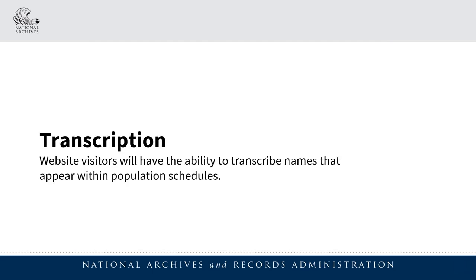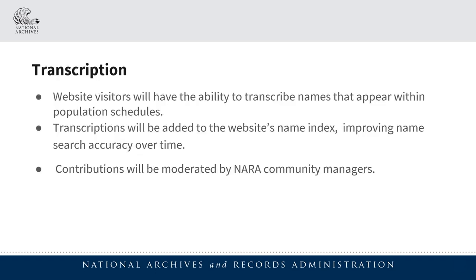We realize that the name search feature will not be perfect. As I mentioned, the quality of the text extractions from the population schedules was greatly impacted in some cases by the quality of handwriting or the overall condition of the original microfilm. And that brings me to our next feature: transcription. Website visitors will have the ability to transcribe names that appear within the 1950 census population schedules. As visitors submit transcriptions, they will also be incorporated into the website's name index, which will improve the quality of the name search feature over time. There's also a moderation component within the tool, which includes quality control measures and will allow NARA community managers to review the transcriptions being contributed to the site.